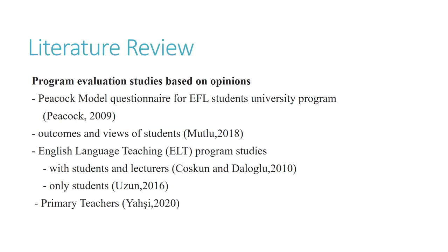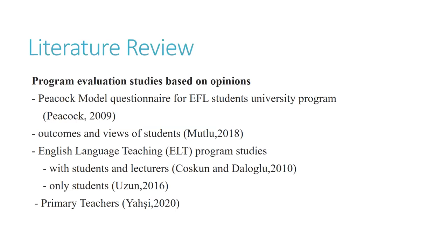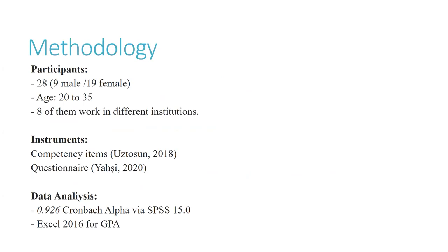Yashi's study found that primary teachers who took a teaching English to young learners course performed better than those who did not. The research questions are: what are students' perceptions of implementation techniques, methods, and pedagogical content knowledge of the course? What are the course strengths and weaknesses? What suggestions can be given based on results? There were 28 participants aged 20 to 35; eight worked in different institutions as English teachers. I used a questionnaire prepared by Yashi with items listed by Ustosun as competency items for teaching English to young learners, with a Cronbach Alpha reliability of 0.926.